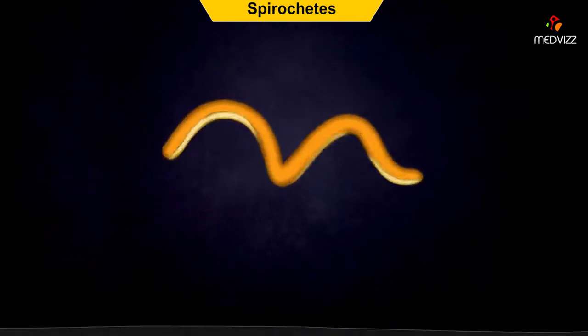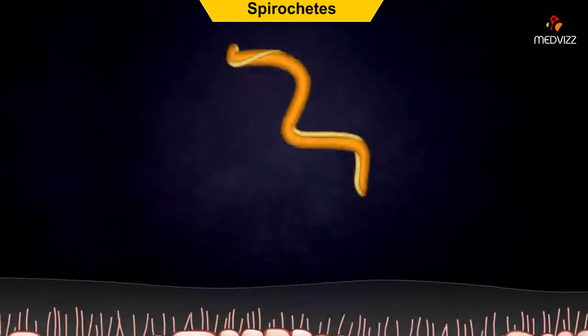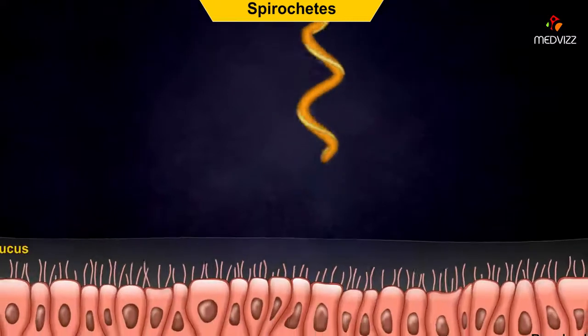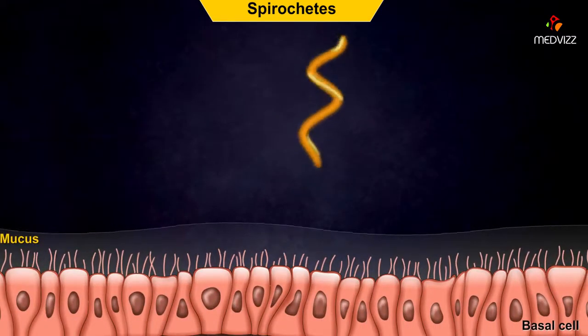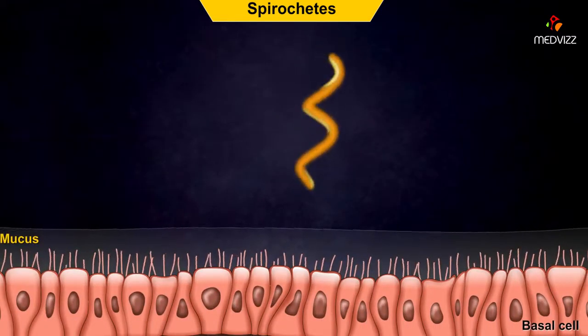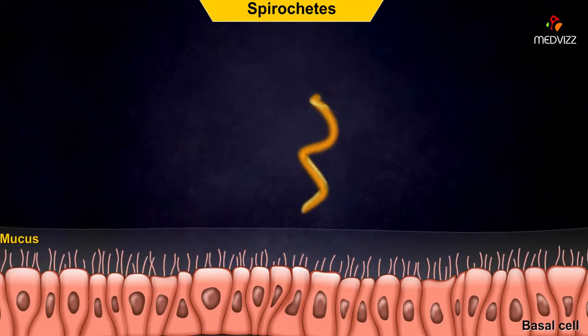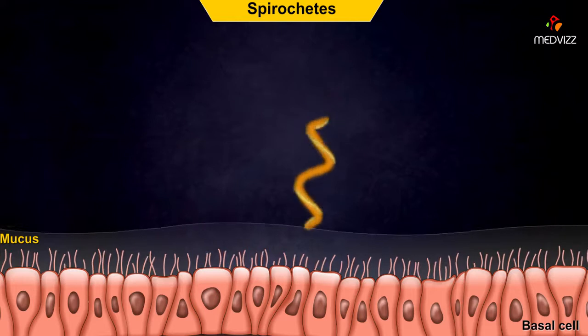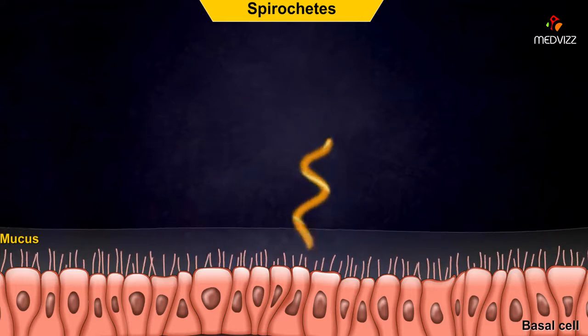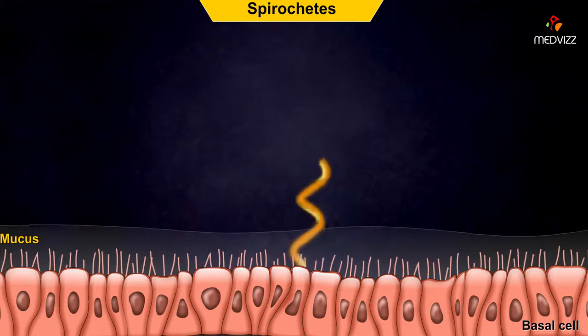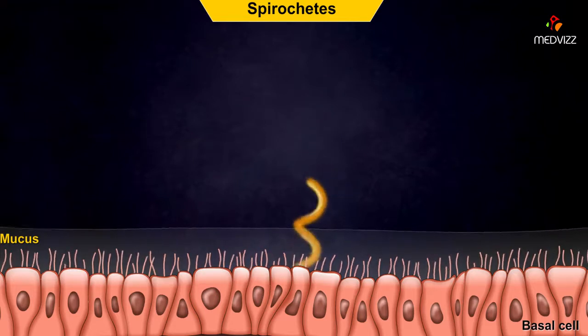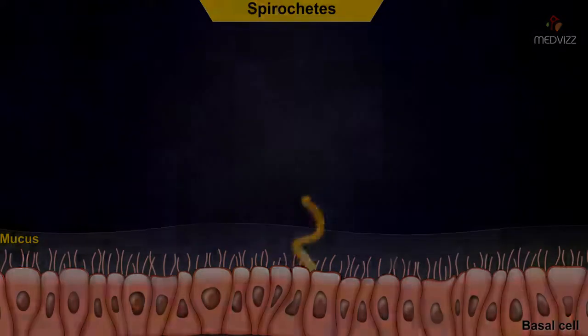It is thought that this manner of movement allows the spirochetes to move more easily through viscous human tissues and fluids, such as mucus. Then they can easily attach to the cells below.